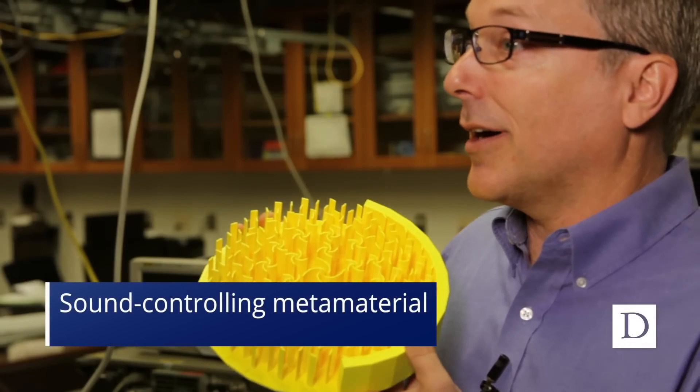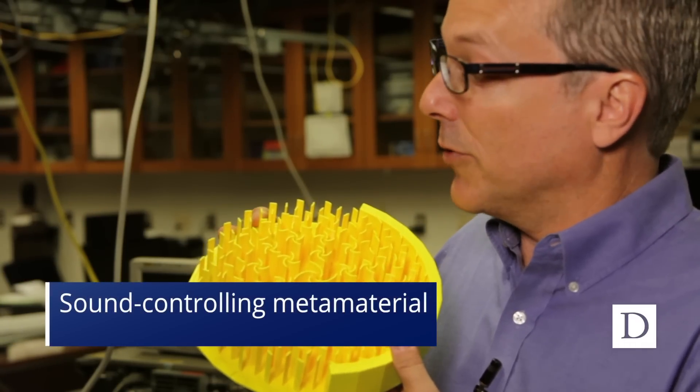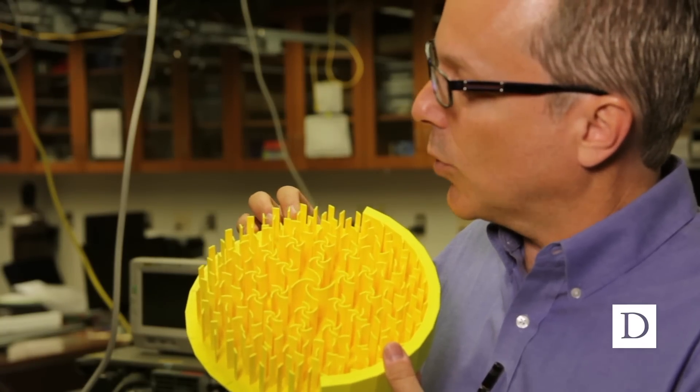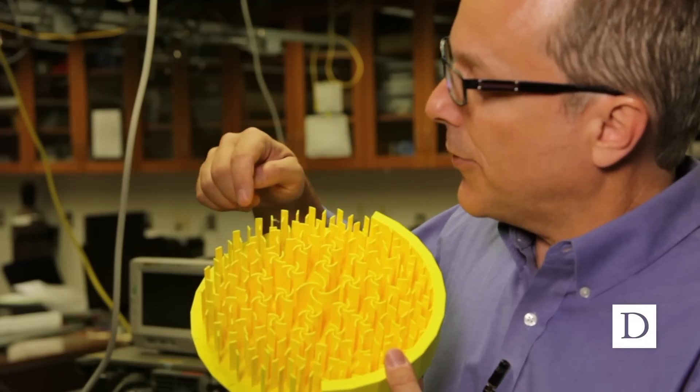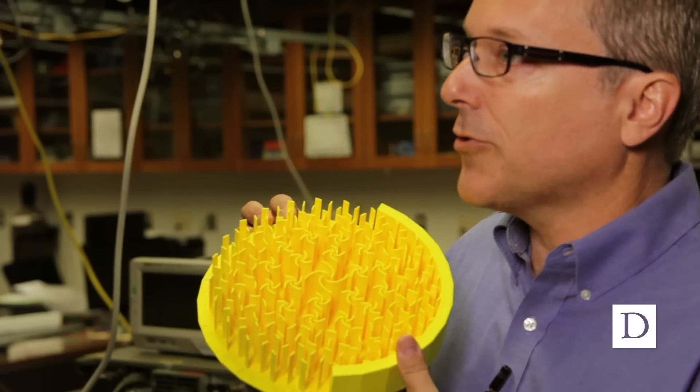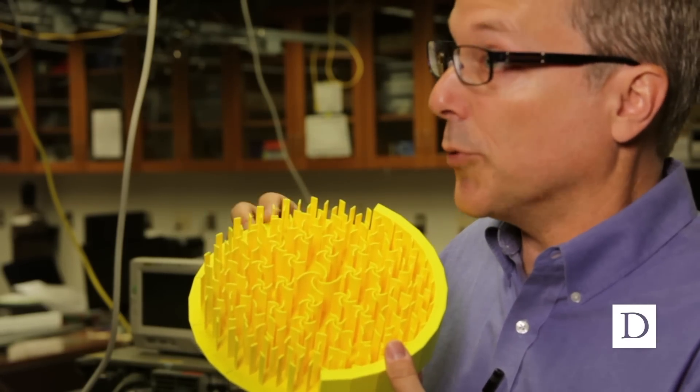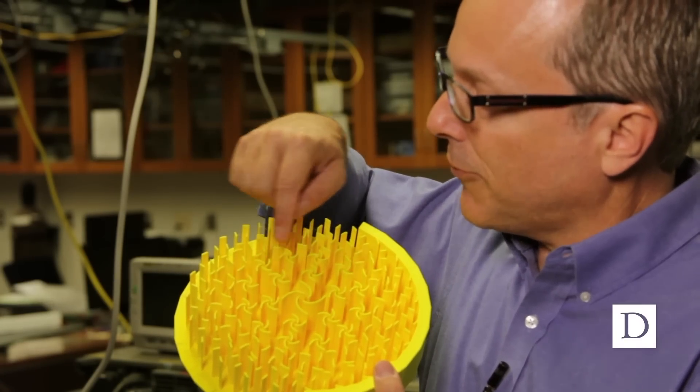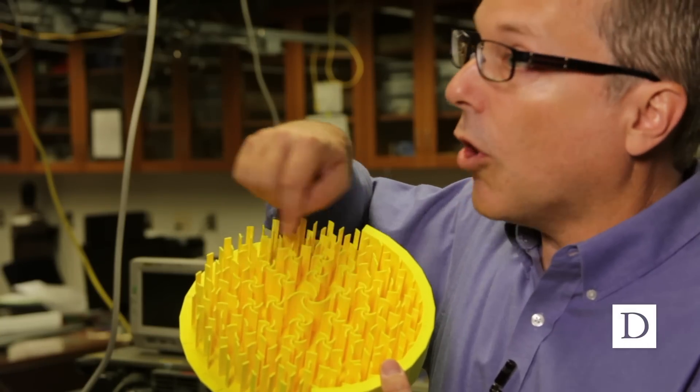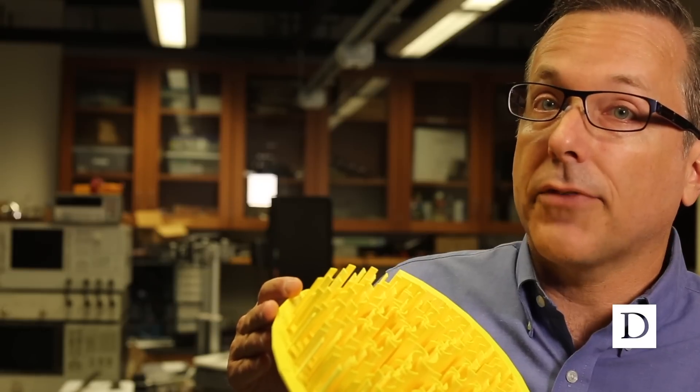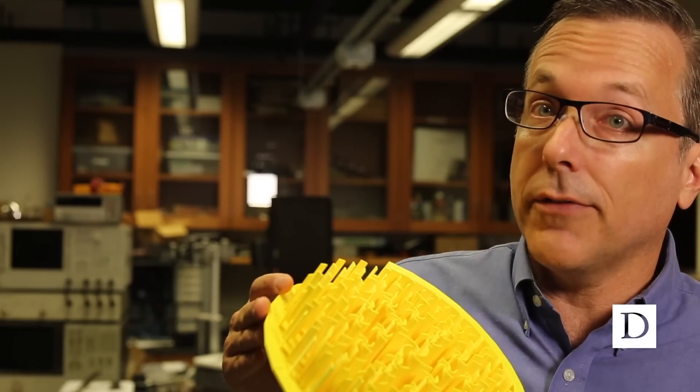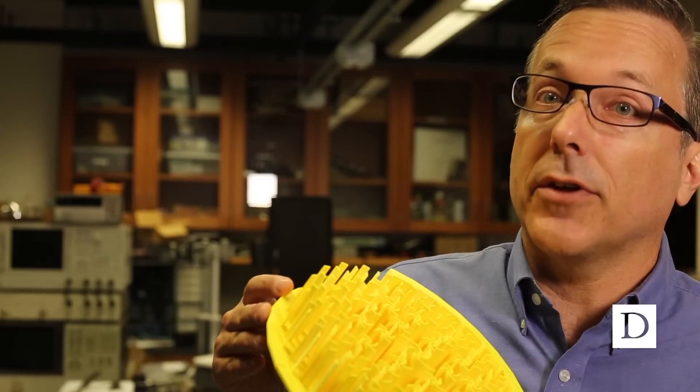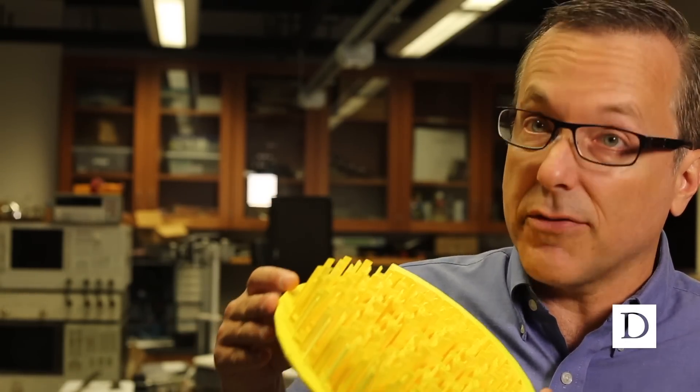So this is an example of a sound controlling metamaterial that we've built, and if you look at the internal structure here, you can get some idea of how it actually works. At the outer edge here, there's not very much material, and the sound wave is essentially free to travel like it would through air. But if you move towards the middle of this structure, you see that we have pieces that force the air, the sound waves, into longer and longer spiral paths. And that has the effect of slowing down the sound wave as it travels through that structure, which ends up having exactly the same impact as if the material is traveling through a more dense, heavier fluid.